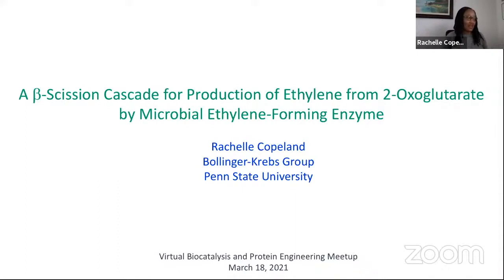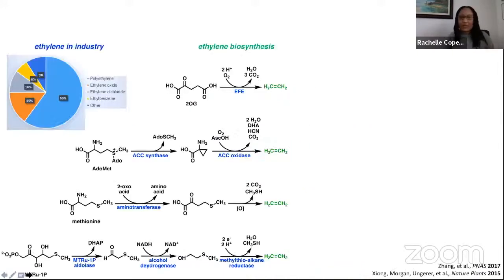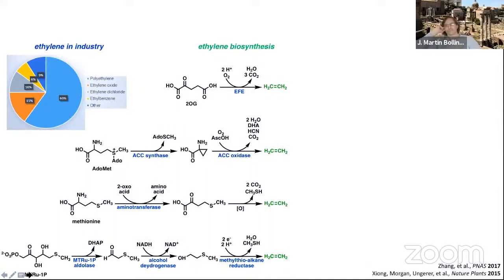The title of my talk is A Beta Scission Cascade for Production of Ethylene from 2-oxoglutarate by microbial ethylene-forming enzyme. Ethylene is most commonly known as the fruit ripening hormone, but it's also important in industry where it's actually the most abundantly produced compound. It's a feedstock for production of a variety of polymers and solvents that are ubiquitous in our modern lives.